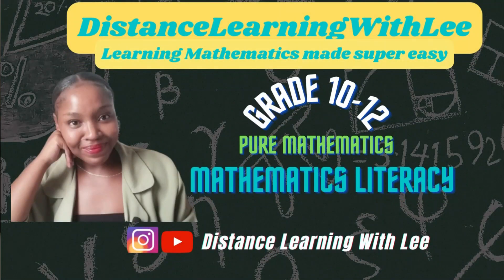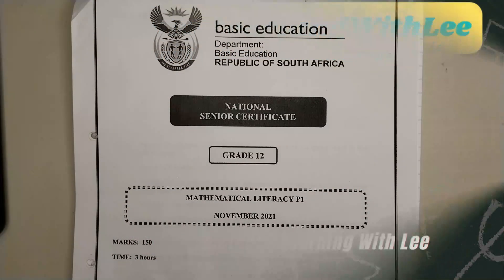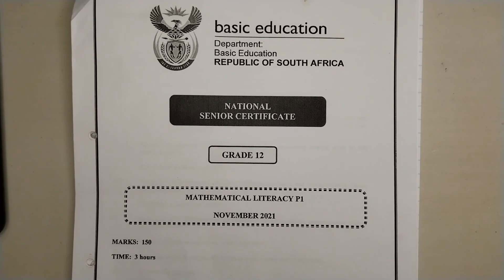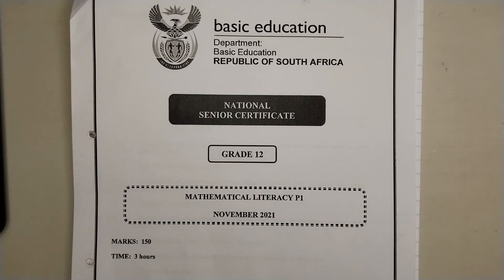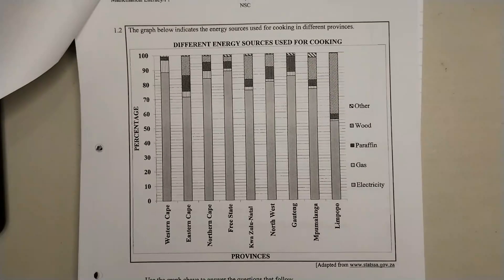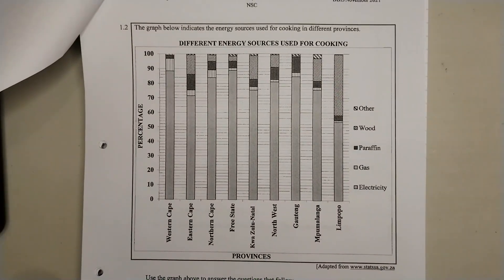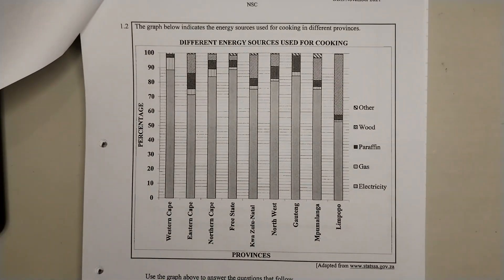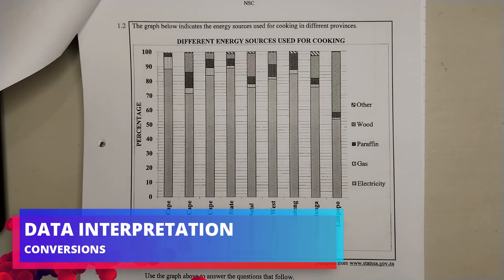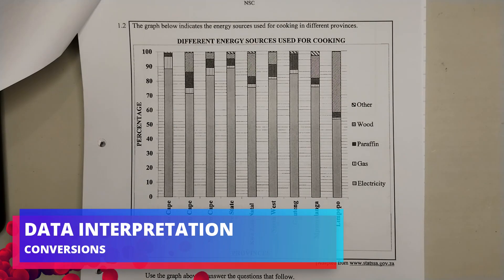Hey mathematics learners, welcome to Distance Learning with Lee, where I make learning mathematics super easy. On today's video tutorial, we are going through the Grade 12 Mathematics Literacy Paper 1 that was written in November 2021. We are going to be focusing on Question 1.2, which focuses on interpreting data and doing a bit of conversions.